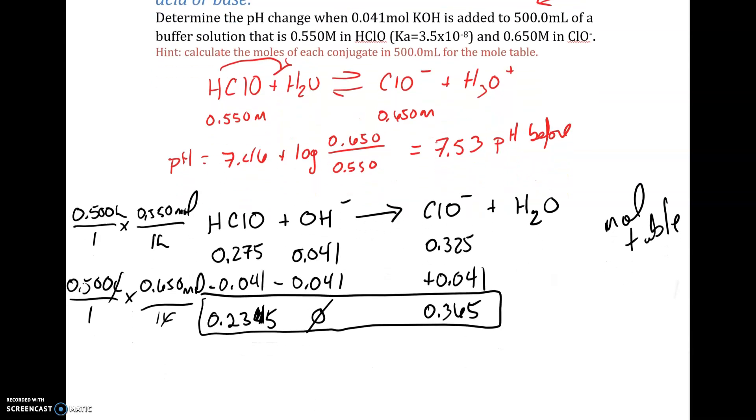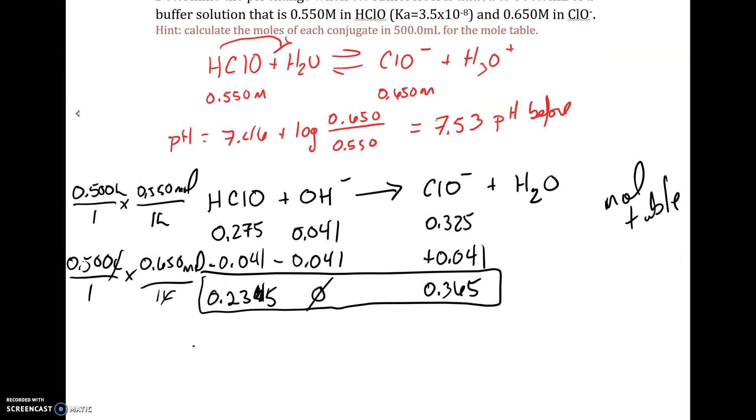These are in moles. But we can use moles in our Henderson-Hasselbalch equation. So that's another advantage. We don't have to put them back into molarity. So our pH, same pKa, same buffer system. We're going to have a different ratio of base over acid. Do that ratio, take the log of it, add 7.46 to it. We get 7.65 pH units after this addition.